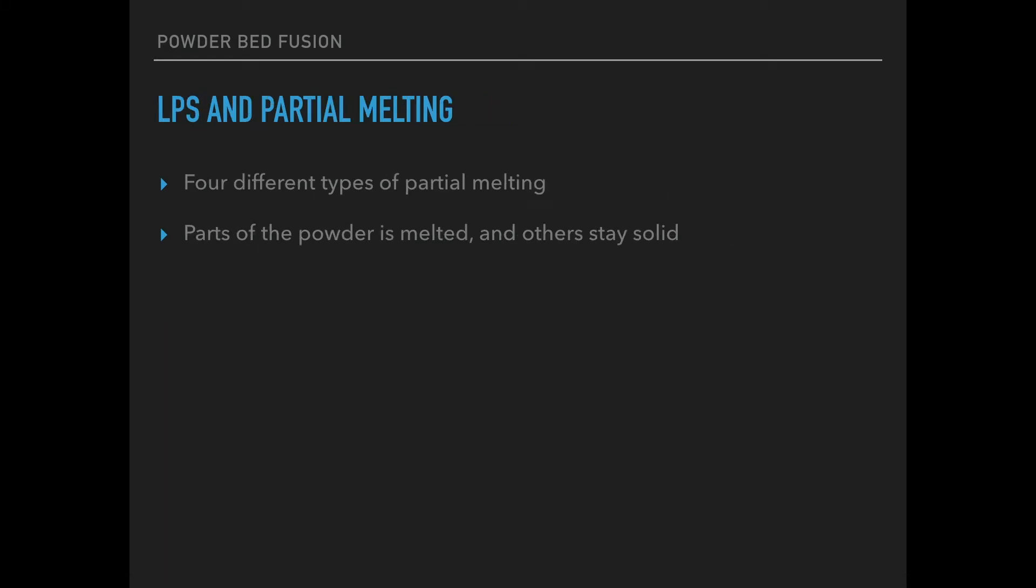LPS and partial melting is the third type. This process is a little bit different. It actually has some subgroups in it as well. In this type of powder bed fusion, part of the powder is melted and the rest stays solid. The melted part acts like a glue to bind the unmelted part. Let's talk about the different types of partial melting.